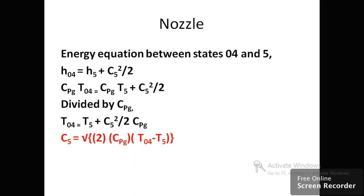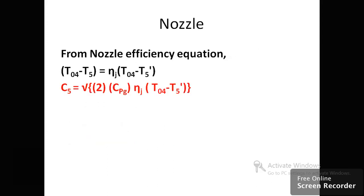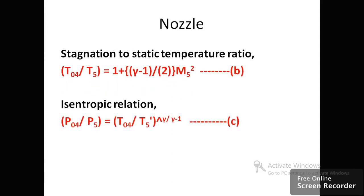To find the exit velocity from the nozzle, we apply the energy equation between states 04 and 5: h₀₄ = h₅ + C₅²/2. Since h = Cpg·T: Cpg·T₀₄ = Cpg·T₅ + C₅²/2. Dividing by Cpg: T₀₄ = T₅ + C₅²/(2·Cpg), so C₅ = √(2·Cpg·(T₀₄ − T₅)). Substituting T₀₄ − T₅ = η_nozzle·(T₀₄ − T₅′) gives: C₅ = √(2·Cpg·η_nozzle·(T₀₄ − T₅′)).